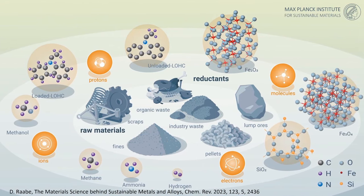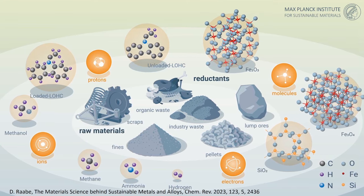We have an overview map showing different possibilities to attack this problem. In the middle, you can see different feedstocks like pellets, lump ores, and industry waste fines. You can also use scrap. As already mentioned, you can replace carbon with hydrogen, which is difficult and expensive to produce, so we also look into other carriers such as ammonia, methane, methanol, and liquid organic hydrogen carriers.